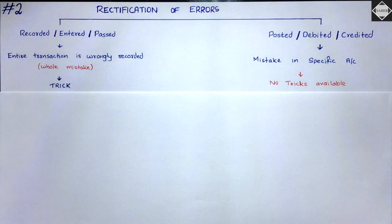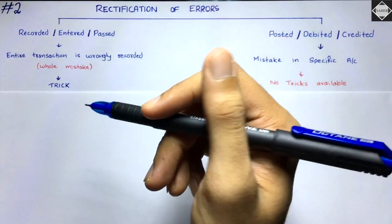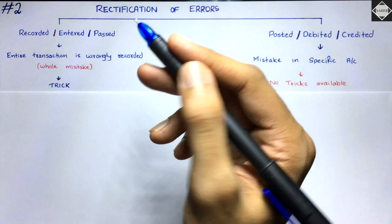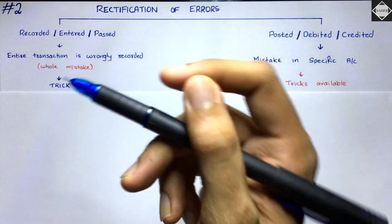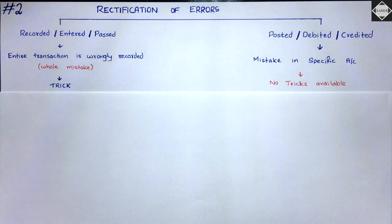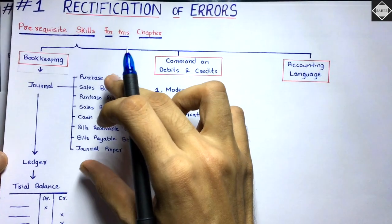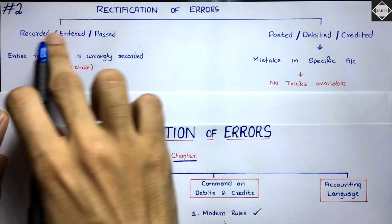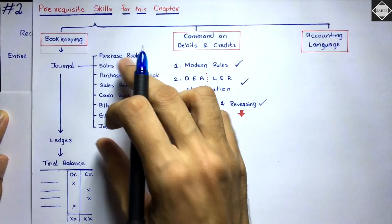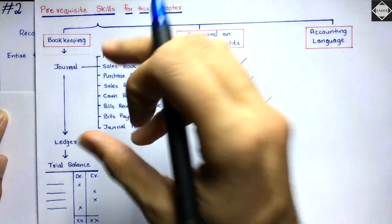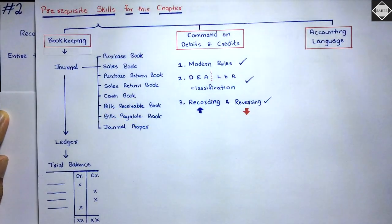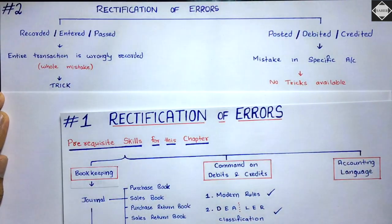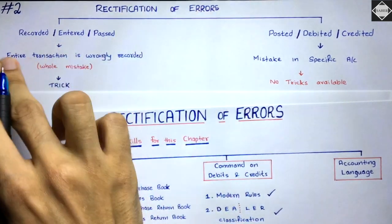Where do we use the terms 'recorded', 'entered', and 'passed' in accounting? We use them in the step of journal or subsidiary books — pass the journal entry, enter the transaction into subsidiary books, record it in the subsidiary books. So whenever the question says recorded, entered, or passed, you have to understand they are talking about the area of subsidiary books — the error is in the subsidiary books. In subsidiary books, the initial recording means the entire transaction is wrongly recorded.